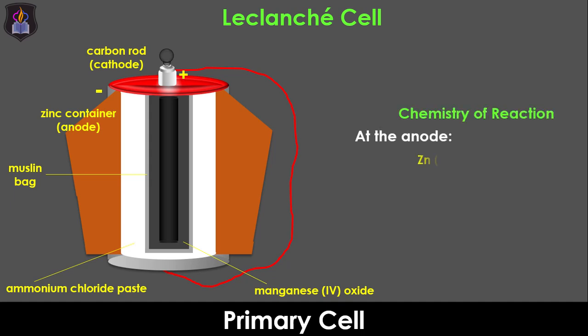At the anode, the zinc atom undergoes oxidation to form zinc ions. The electrons lost travel through the wire to the cathode. The ammonium ions gain the electrons and become reduced to ammonia and hydrogen gases. The hydrogen gas can adhere to the surface of the cathode. This is known as polarization. To prevent this, the manganese 4 oxide acts as a depolarizer and removes the hydrogen gas by oxidizing it to water as it is being formed. A fully operational Leclanche cell has an EMF of about 1.5 volts.